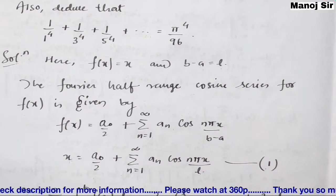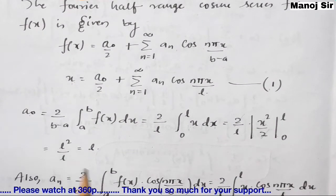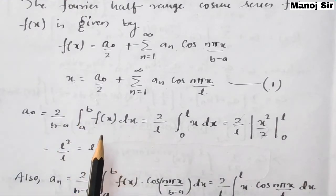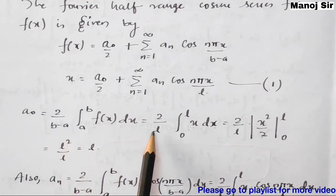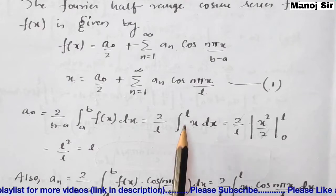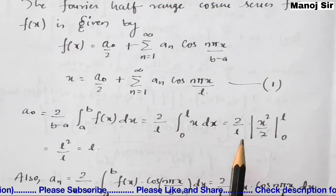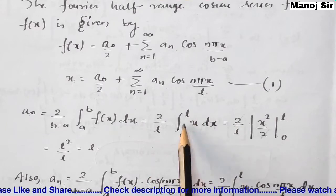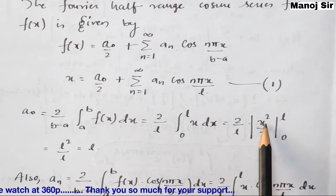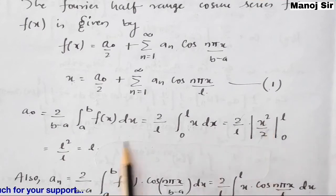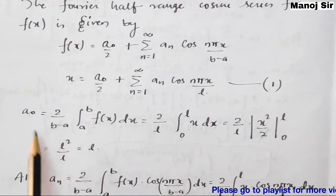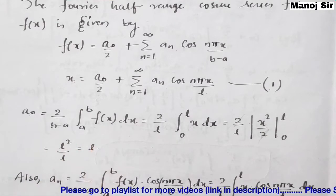First we find a₀. The formula is a₀ = (2/(b-a)) ∫₀ᵇ f(x) dx. With b - a = l, this becomes (2/l) ∫₀ˡ x dx = (2/l) · [x²/2]₀ˡ. The factor of 2 cancels, giving l²/l = l. So a₀ = l.